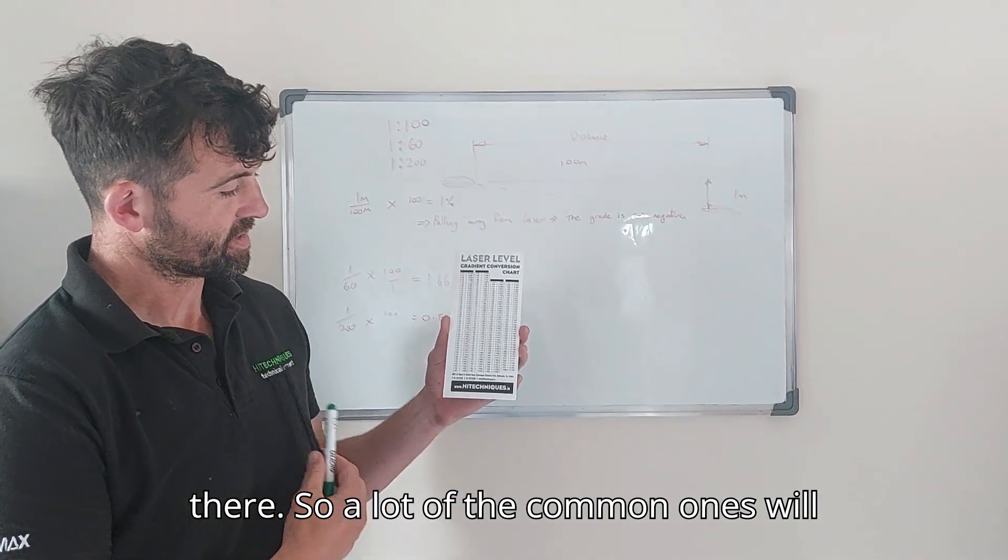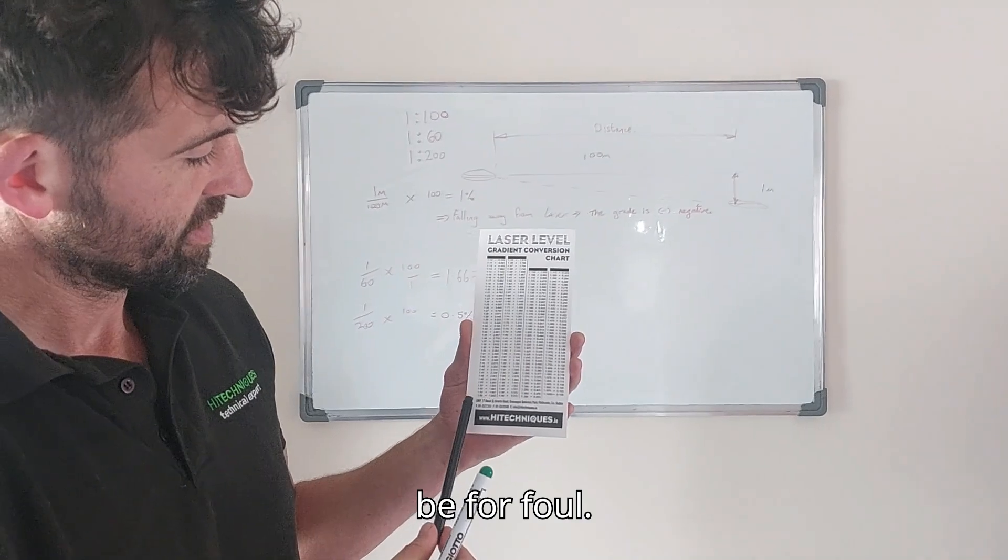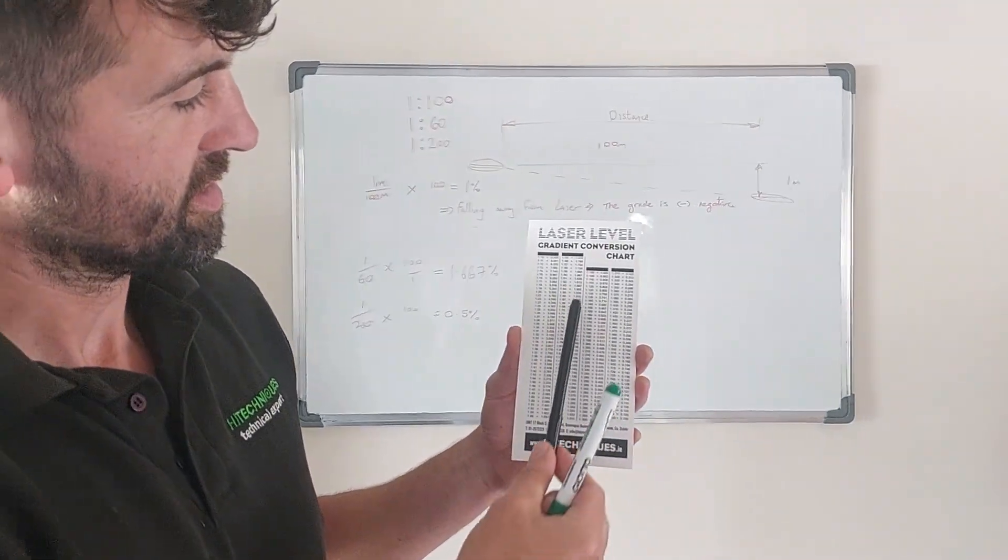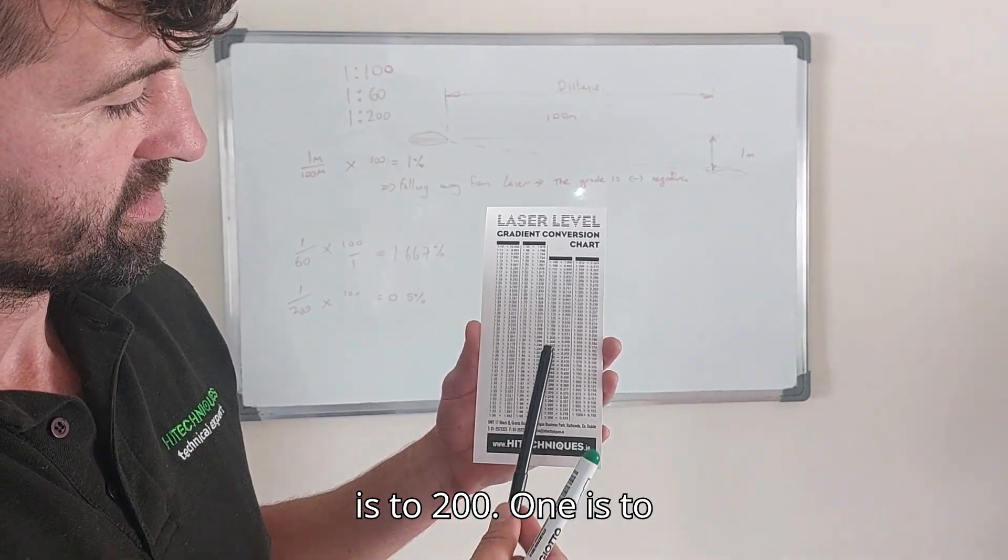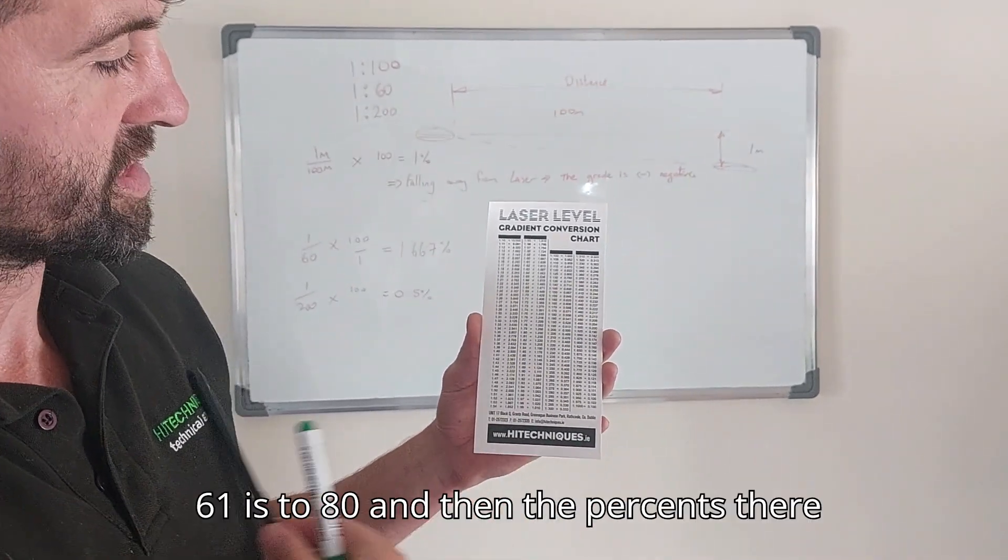A lot of the common ones will be for fall: 1 is to 100, 1 is to 200, 1 is to 60, 1 is to 80.